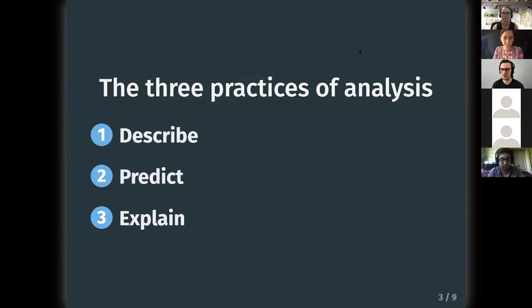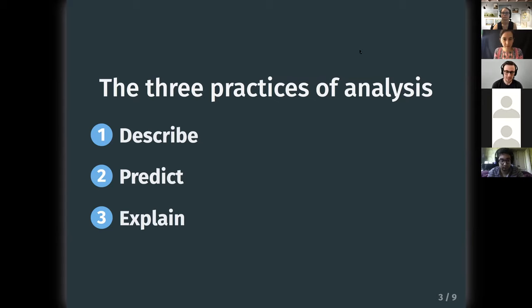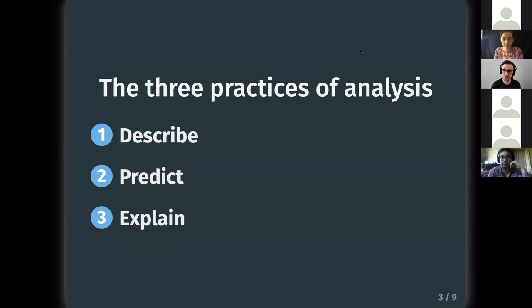We're going to focus today on number three: explain. There are really three practices of analyses — describing, predicting, and explaining — and they're interrelated but distinct. When setting out a goal, we need to be clear about those goals. As an epidemiologist, explaining is a big thing, but describing and predicting are important too. You might focus on prediction with machine learning models but also be curious about how these tools intersect with causal explanation.